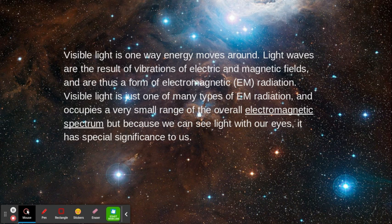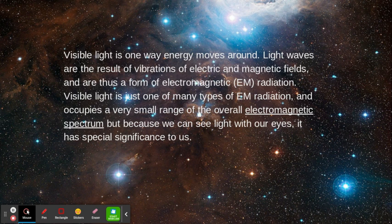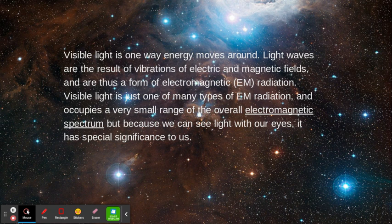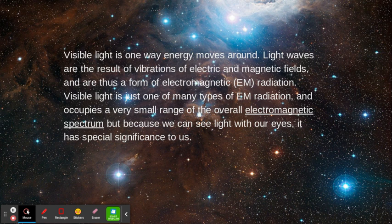Visible light is just one of many types of EM radiation and occupies a very small range of the overall electromagnetic spectrum. But because we can see light with our eyes, it has special significance to us.